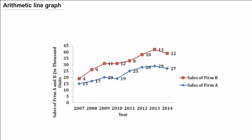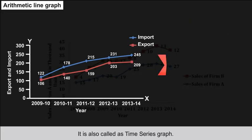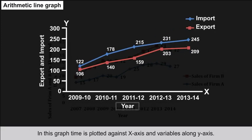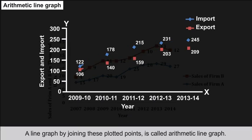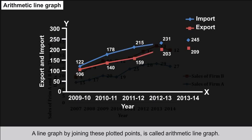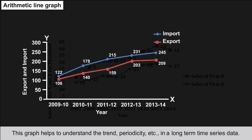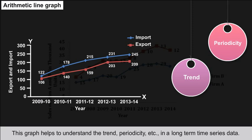Arithmetic Line Graph: Also called a time series graph, time is plotted along the x-axis and the variable along the y-axis. A line graph formed by joining these plotted points is called an arithmetic line graph. This graph helps to understand the trend, periodicity, etc. in long-term time series data.